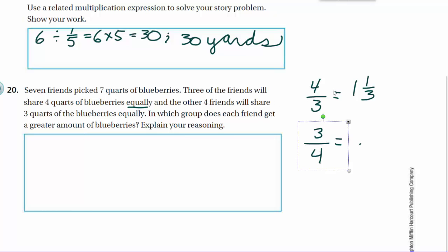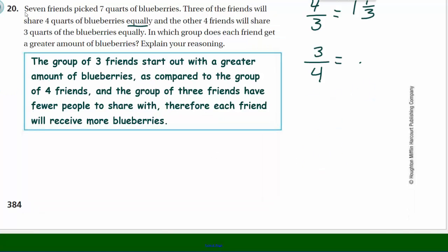And my reasoning behind it, well, the group of 3 friends will get a greater amount of blueberries. Because obviously you're starting off with a little bit more blueberries and less friends. And here you're starting off with less blueberries, only 3 quarts. And you have more friends that we didn't really even have to figure that part of it out. But we need to write a reasoning, which I will do momentarily. And there you go. The group of 3 friends start out with a greater amount of blueberries, as compared to the group of 4 friends. Because the 3 friends, they start off with 4 quarts as opposed to 3. Then the group of 3 friends have fewer people that they'll have to share with. So each friend is going to receive more blueberries. And just like that, I say, cha-ching.